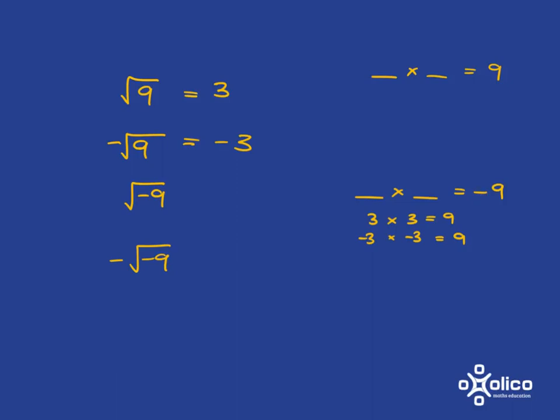So this means that the square root of negative 9 is undefined — we cannot take the square root of a negative number. And obviously, if we were looking at the negative of the square root of negative 9, well, that is also undefined. We cannot take the square root of a negative number if we're working in the real number system.